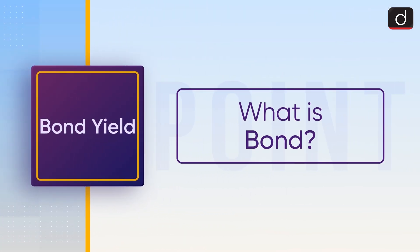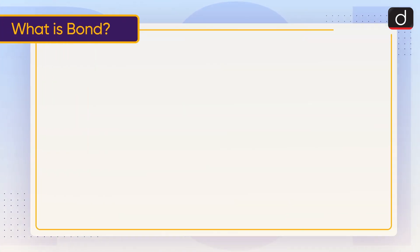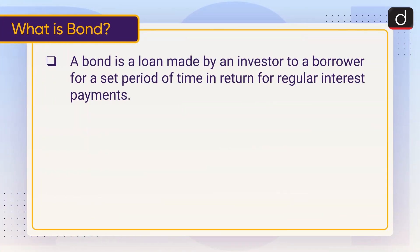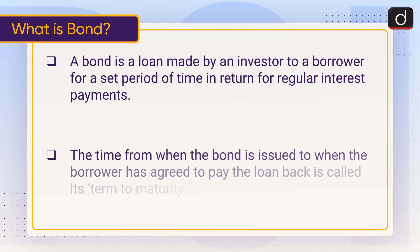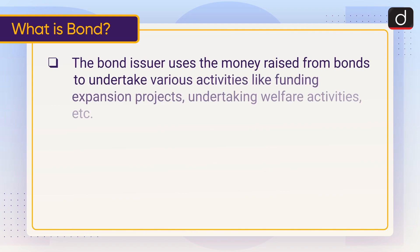Now let's discuss what is a bond. A bond is a loan made by an investor to a borrower for a set period of time, in return for regular interest payments. The time from when the bond is issued to when the borrower has agreed to pay the loan back is called its term to maturity. The bond issuer uses the money raised from bonds to undertake various activities like funding expansion projects and welfare activities.